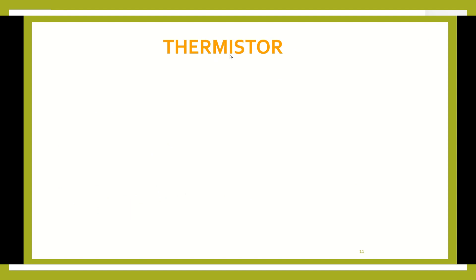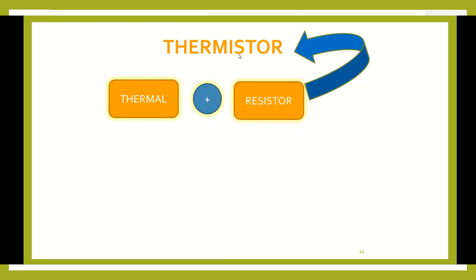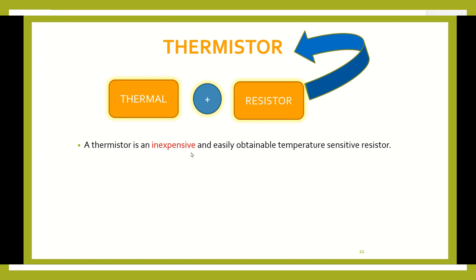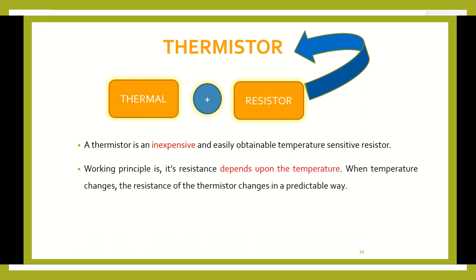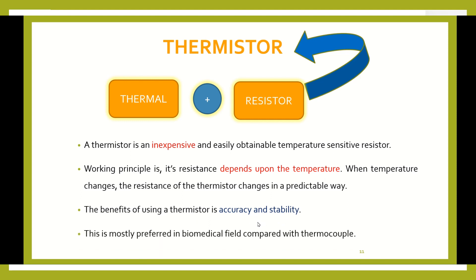The third device used to measure systematic body temperature is the thermistor — a combination of 'thermal' and 'resistor'. Due to the body temperature, the resistance changes, which is why it is called a thermistor. It is a very cheap device, mainly useful in the biomedical field. The resistance varies depending on temperature. The benefit of the thermistor is that it gives good accuracy and stability, so it is mostly used in the biomedical field.